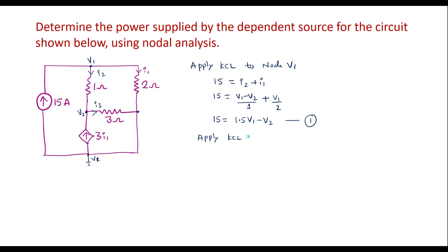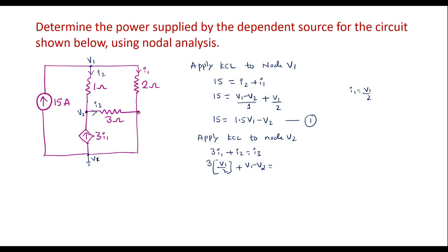Applying KCL to node V2: 3·I1 + I2 = I3, where 3·I1 and I2 are incoming currents and I3 is leaving V2. Since I1 = V1/2, we write: 3·(V1/2) + (V1 − V2)/1 = I3. I3 is V2/3.